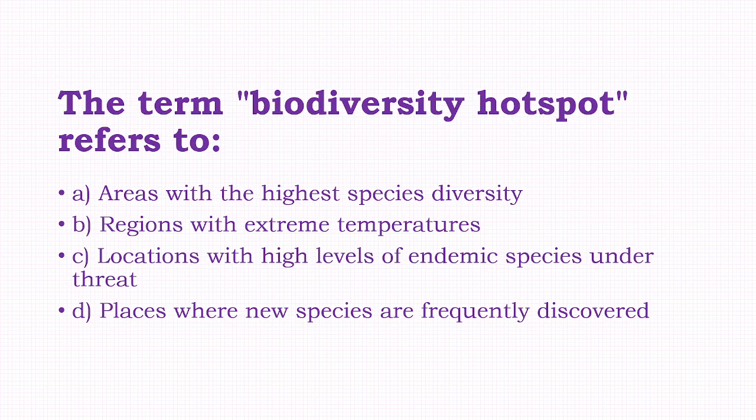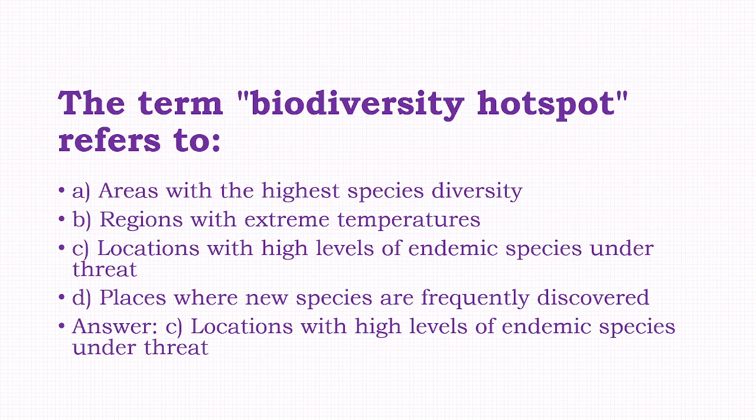The term biodiversity hotspot refers to: areas with the highest species diversity, regions with extreme temperatures, locations with high levels of endemic species under threat, places where new species are frequently discovered. The answer is option C, that is locations with high levels of endemic species under threat.